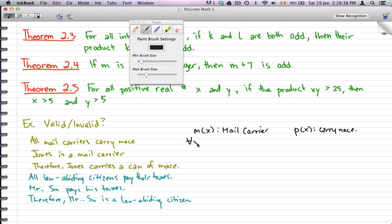So all mail carriers carry mace. So what we're saying is MX implies PX. And Jones is a mail carrier, so that's MJ. So using MJ, that means that Jones must carry mace because this is the statement. So we could just pretty much turn that into MJ implies PJ because this statement implies truth for all, that all mail carriers carry mace.